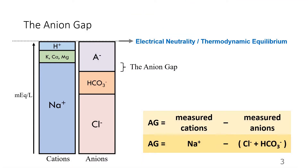This is the Gamblegram, which illustrates the anion gap. The first thing to emphasize is that cations are always equal to anions in terms of electrical charge, maintaining electrical neutrality and thermodynamic equilibrium. The anion gap is calculated by taking the measured cations — in this case sodium — subtracted by the measured anions, which are chloride and bicarbonate.